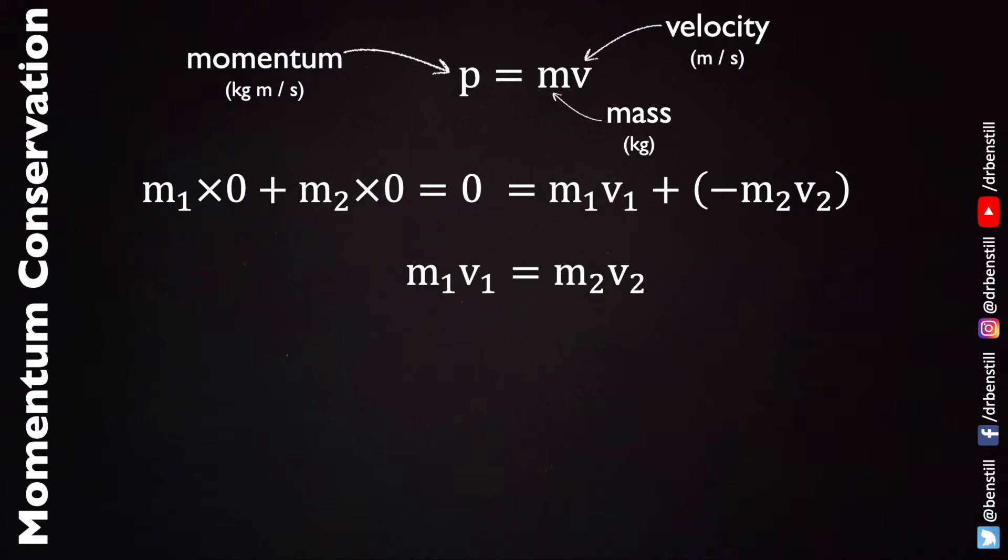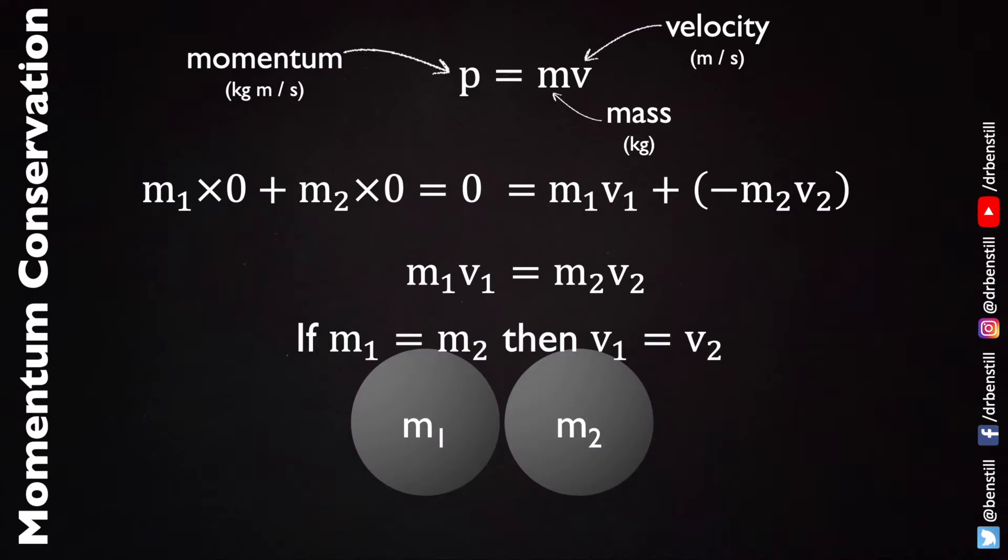If we rearrange that equation we get the following relationship: that the magnitude of the momentum of object one must equal the magnitude of the momentum of object two in an explosion. Now the example I showed mass one and mass two were identical. Now if this is the case then it's clear to see that that would mean that the velocity of each of the objects would also have to be the same.